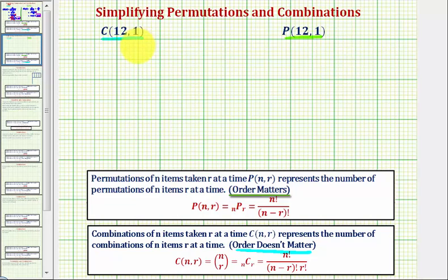So if we're only selecting one item at a time, there really isn't an order to consider. So we'll see when we evaluate these, we'll end up with the same result.